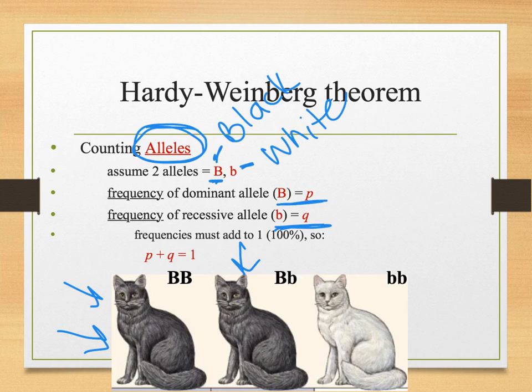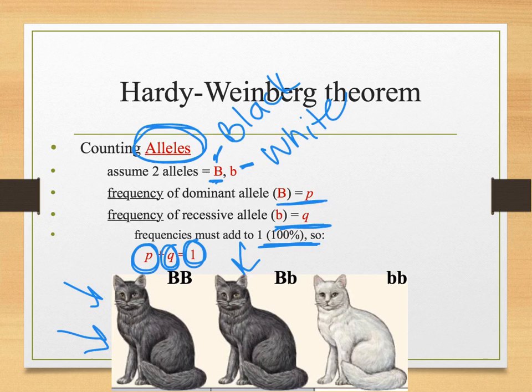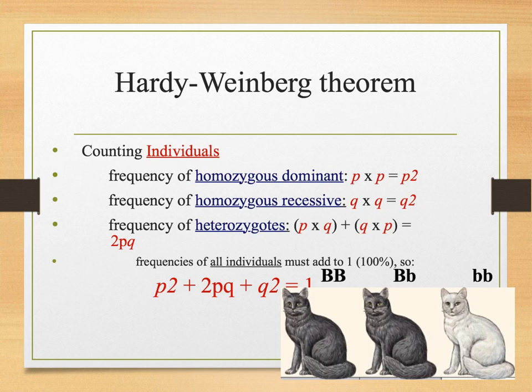So that makes sense: you add up all the black alleles plus all the white alleles, you get 1. The frequencies must add up to 100%, so P plus Q equals 1.